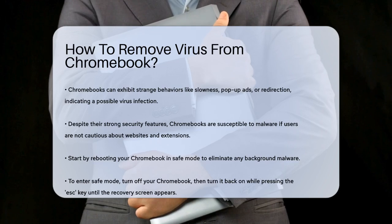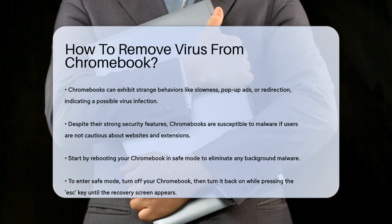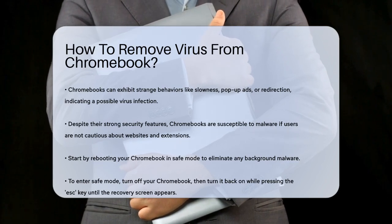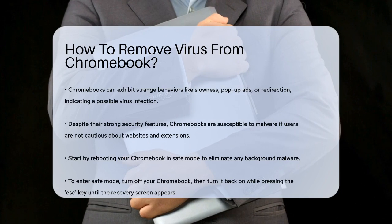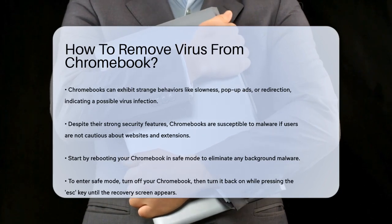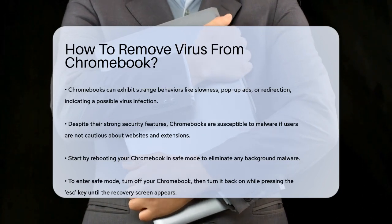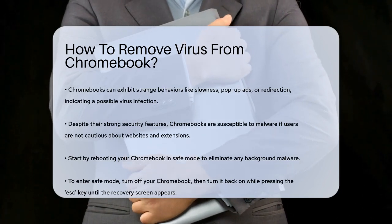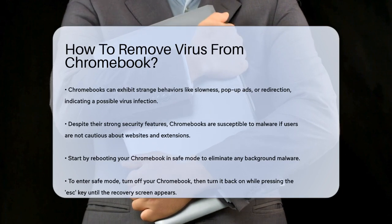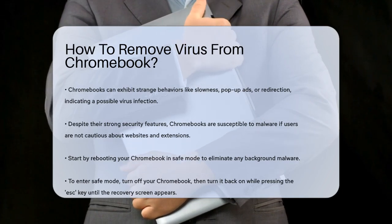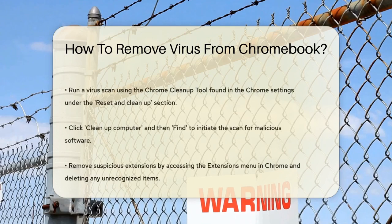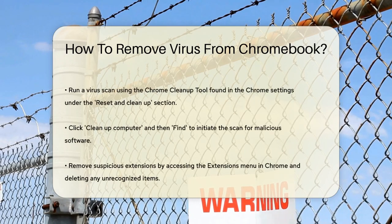To start, you should reboot your Chromebook in Safe Mode. This will help eliminate any malware that might be running in the background. To do this, turn off your Chromebook, then turn it back on and keep pressing the SC key until you see the recovery screen. Use the arrow key to select Safe Mode and press Enter.